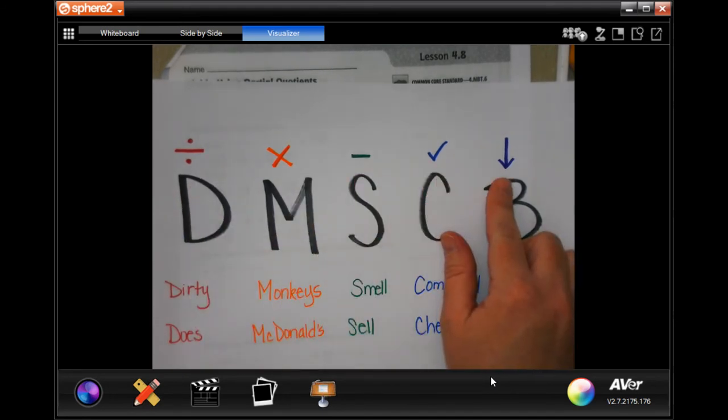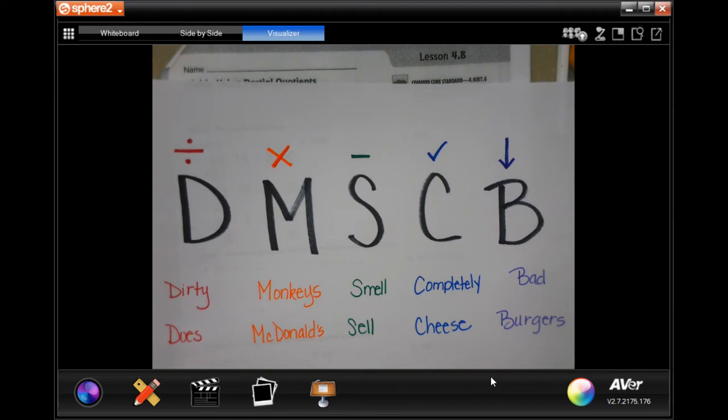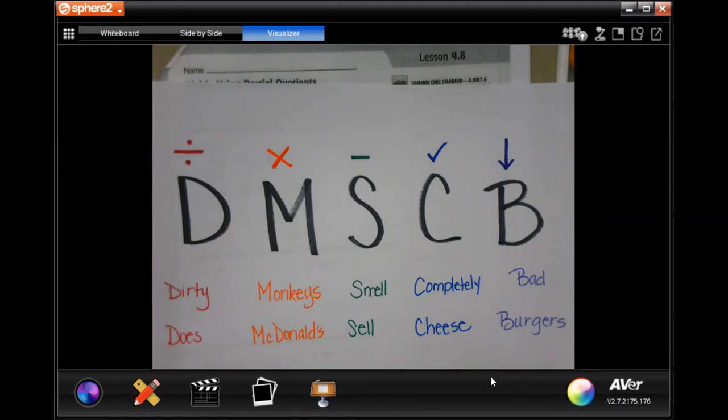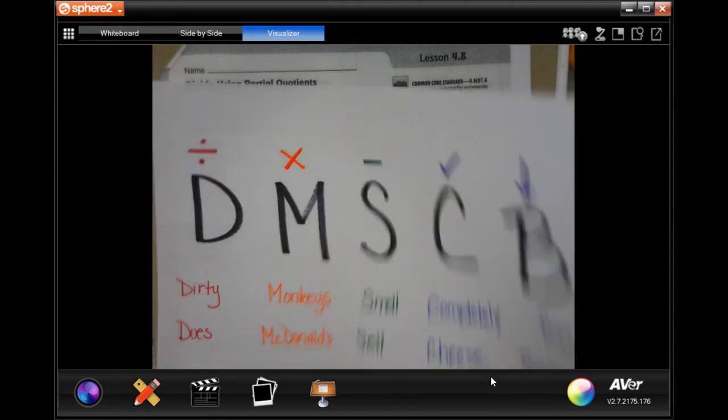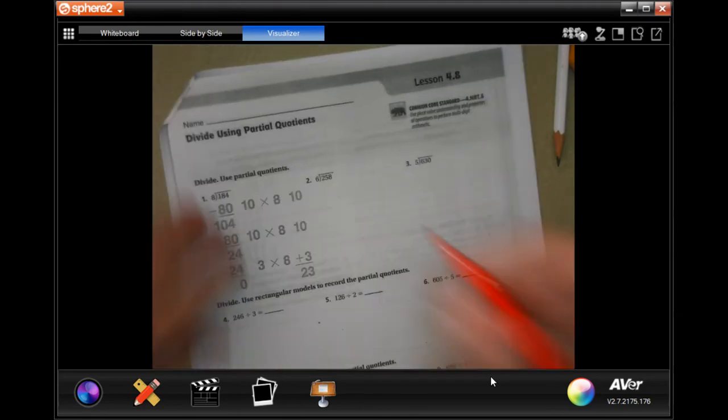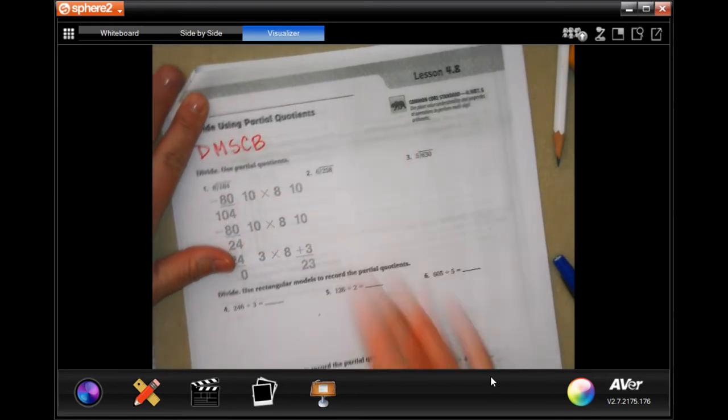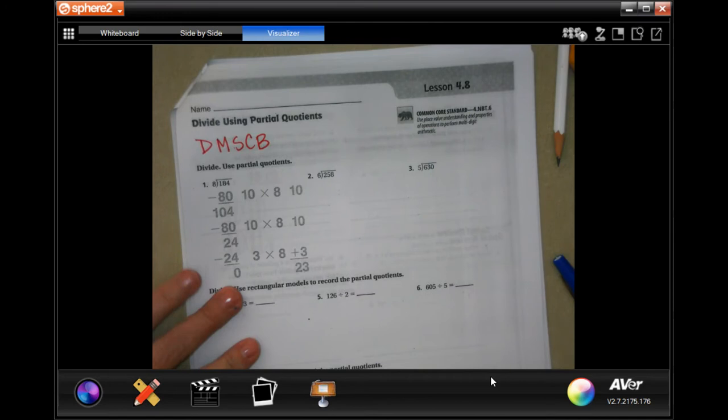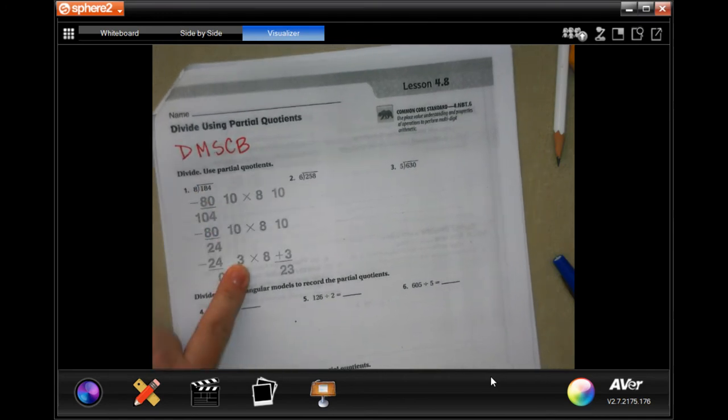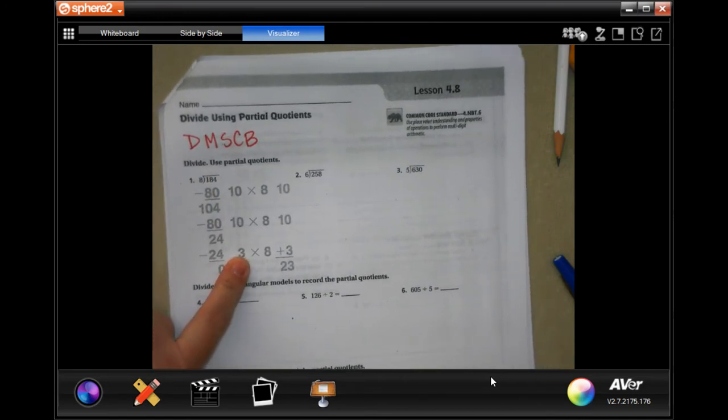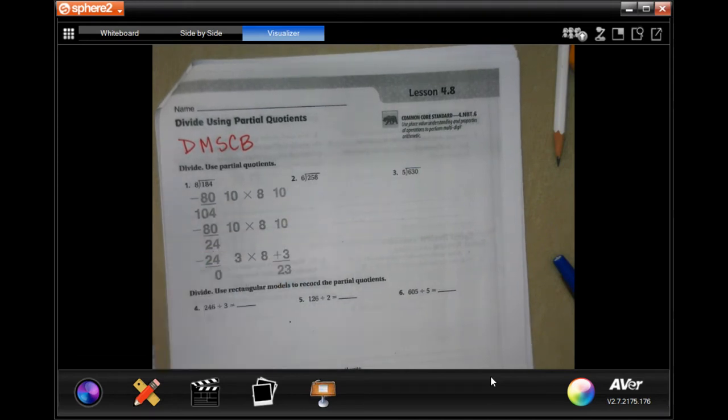We're going to get started. You can pause this, do whatever you need to do to make sure you can write it down. Really, all you need is the letters as long as you know what they mean. I'm going to at the top of my page write those down so that I remember my steps. We're not going to do partial quotients—you're just going to do the division.